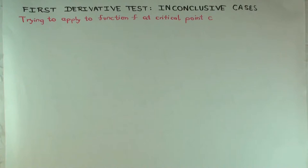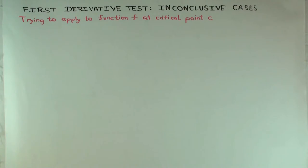We're trying to apply the first derivative test to a function f at a critical point c. What could be the problems? What are the situations where you cannot use the first derivative test? We should go back and look at the first derivative test and remember what assumptions are needed in order to apply it.